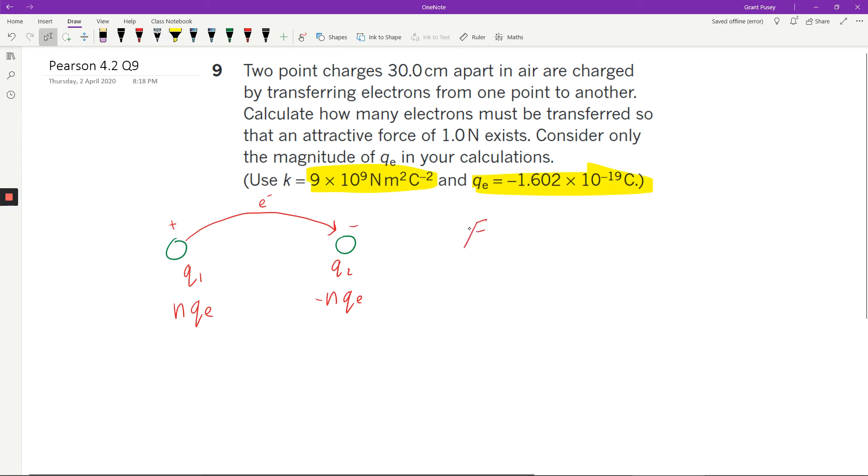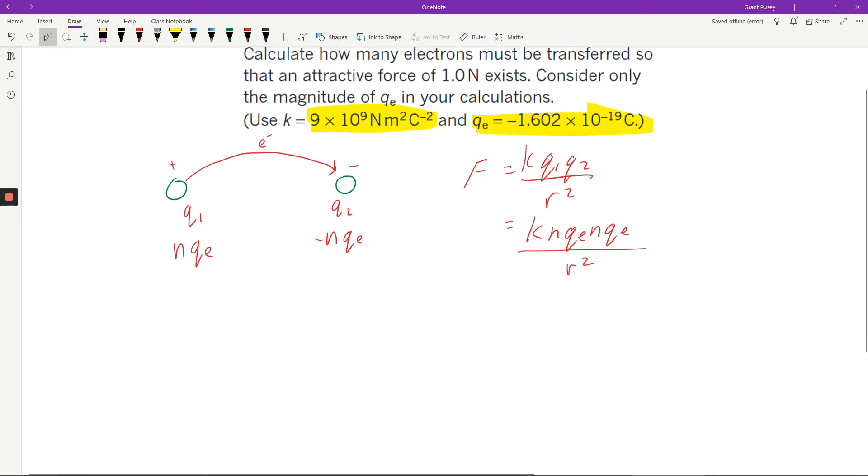So if this is what it looks like, then we can put that in our formula for Coulomb's Law that looks like KQ1Q2 over R squared. And then we can sub in those values. So now I've got KNQe. I'm just going to ignore the negative signs in this case, because I'm looking for the magnitude of that force anyway.